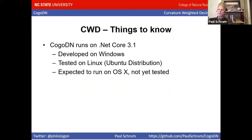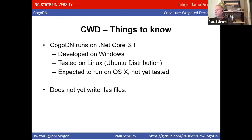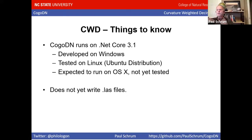Some important things to know: KogoDN runs on .NET Core 3.1. It was developed on Windows and has been tested on Linux under Ubuntu. It has not been tested on OS X, but we expect it should run there. Here's the big caveat: it does not yet create new LAS files. It's currently for writing a research paper. I've worked on making it write LAS files but spent six hours and it didn't work, so I need more time on that — it's a priority for the near future.